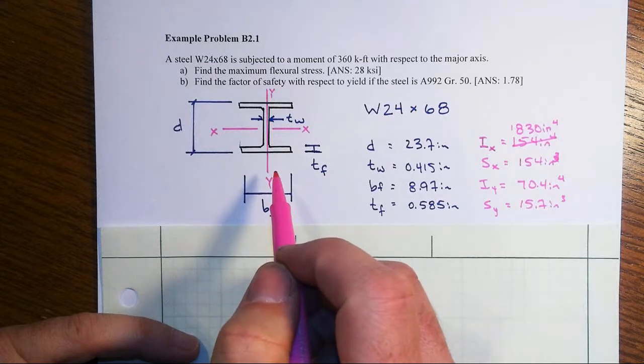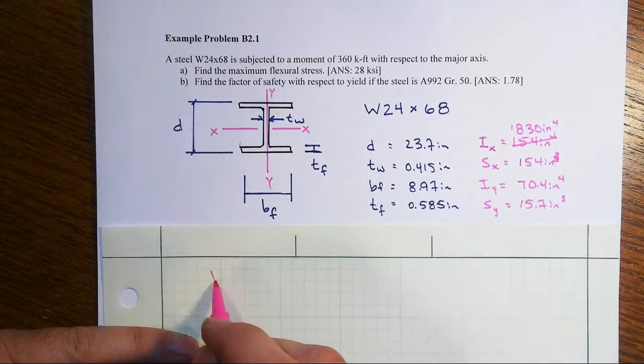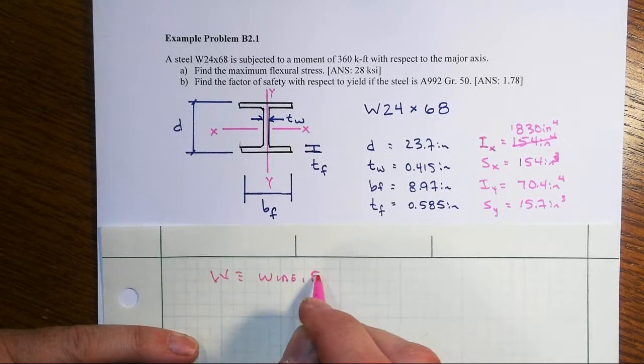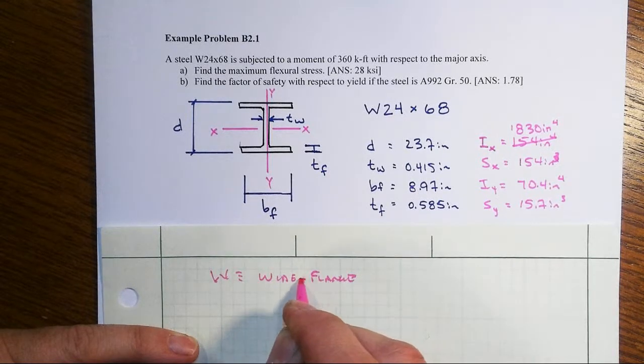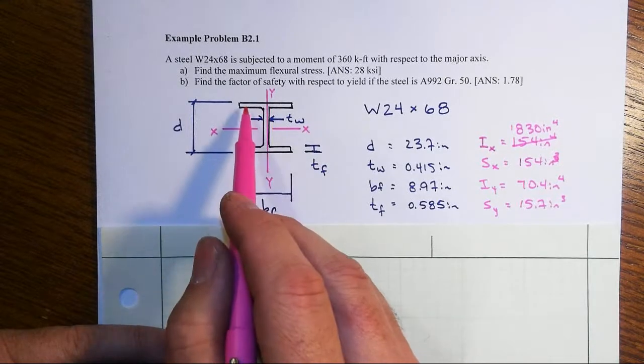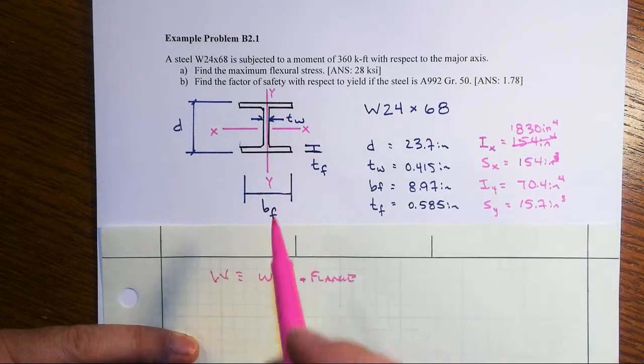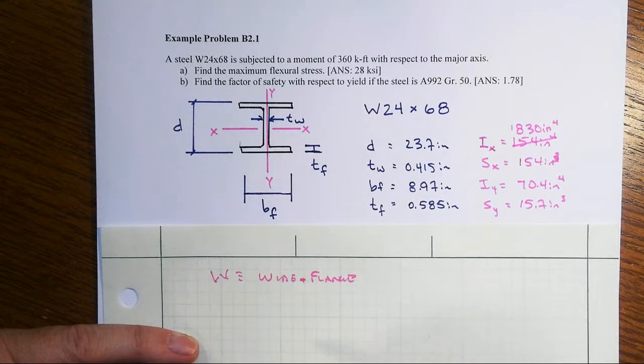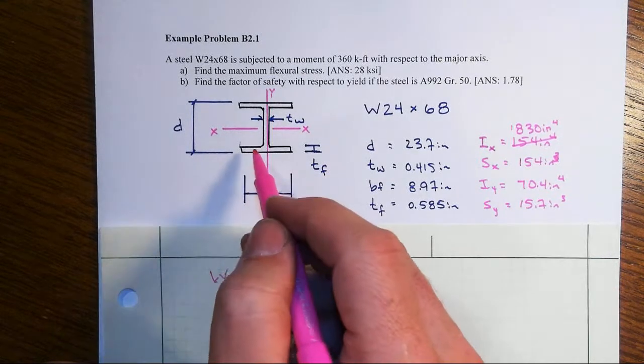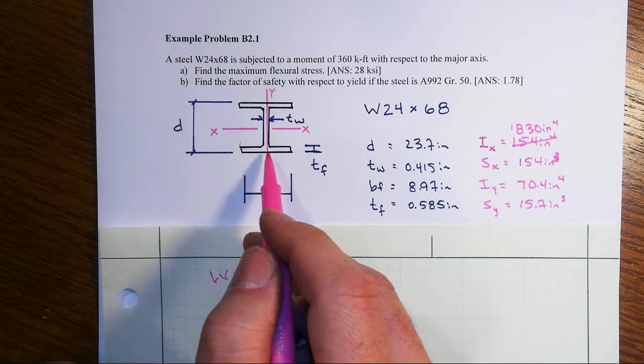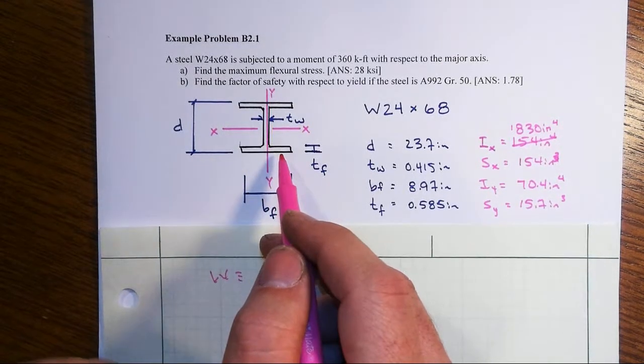what that's telling us is that we have a wide flange section. And what the wide flange means is that we have two parallel flanges where the inside surfaces are parallel to each other. The S shape does not. The inner surfaces are sloped. So the wide flange ones are not. They're parallel to each other.